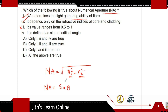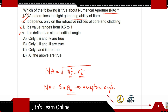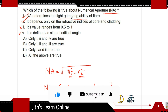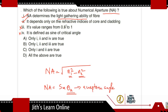Actually, the numerical aperture is defined as the sine of the acceptance angle (theta acceptance), not the critical angle. The acceptance angle is the key concept in optical fiber communication for determining what light enters the fiber. Therefore, statements 1 and 2 are the true statements.